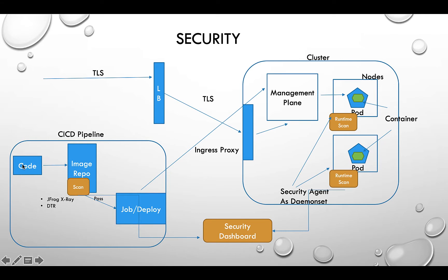You start with your code. In the case of container management, the output is an image, and that image is pushed to the image repo. There are many image repos like Artifactory, DTR, ECR, and many others — they are all container registries where images can be pushed.